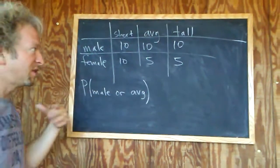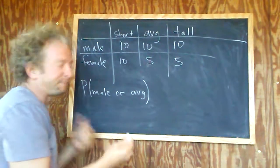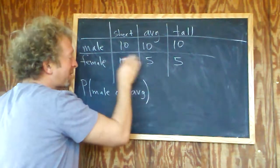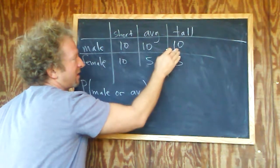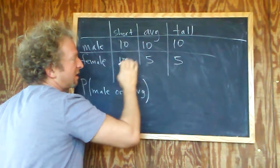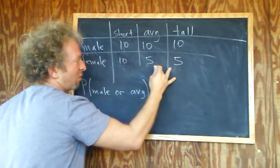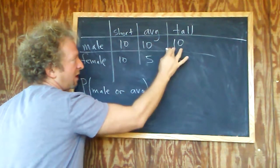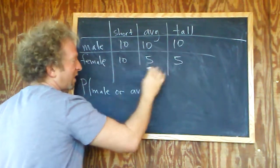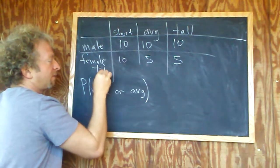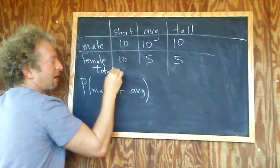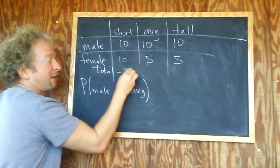The total is the total number of people. To find the total you just add. So 10 plus 10 plus 10 is 30, and 10 plus 10 is 20. So 30 plus 20 is 50 total.